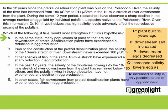Answer choice A says: In the same state, many populations of polar fish that are not downstream of pretzel desalinization plants have experienced a reduction in egg production. Does this strengthen the conclusion that high salinity lowers polar fish egg production? No — it actually weakens it by suggesting that egg production is also low in areas without desalinization plants nearby, implying something else might be causing the reduction. We'll eliminate answer choice A.